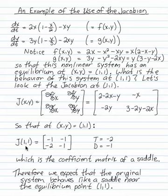This is the Jacobian acting like a microscope so that we can zoom in on the behavior at (1,1).